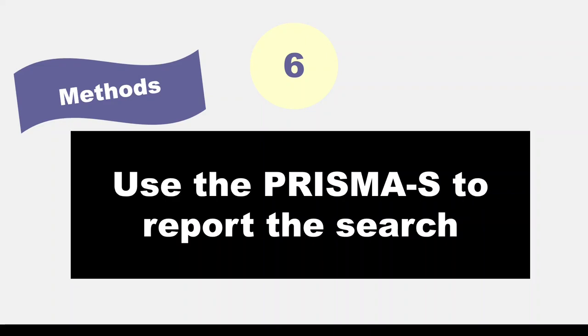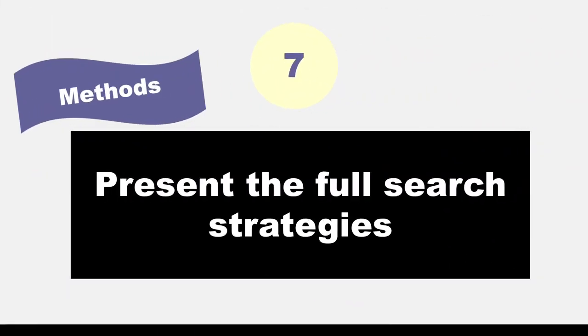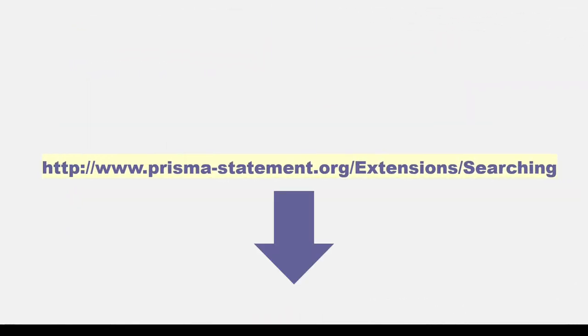In fact, this is where you should consult the PRISMA S. The PRISMA S is the extension for reporting your search and it applies to both item six and item seven of the PRISMA 2020 checklist. Item seven is to present the full search strategies for all databases, registers, and websites, including any filters or limits used. Remember, if you've watched any of my previous videos on applying limits or filters, you know that it's important to cite your published filters and to give credit to the filter creator or creators. I'll put a link to the PRISMA S extension in the video description below.